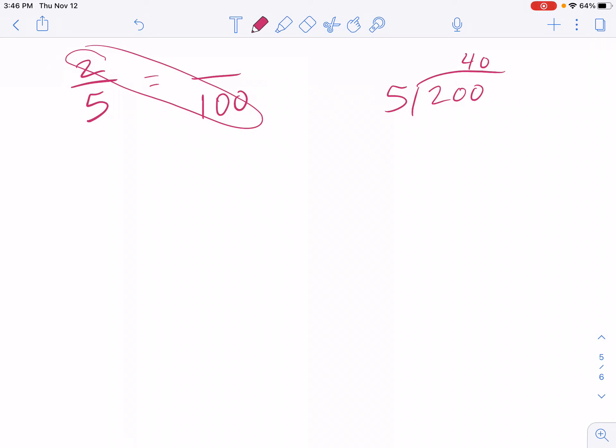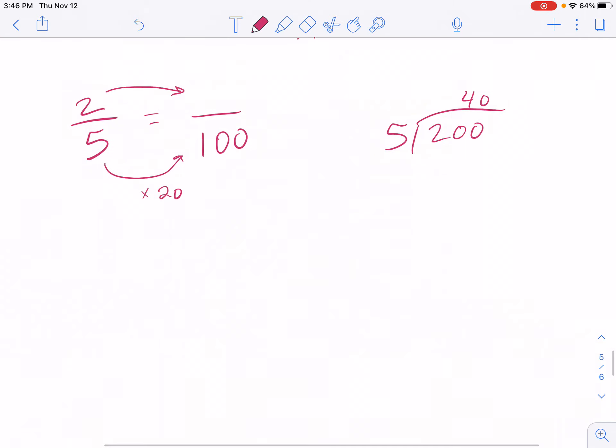Or I could have scaled, which in this case is easier, but remember, it doesn't work for everything. I know that 5 times 20 is 100. So I have to do the same thing up top. If I multiply the bottom by 20, I have to do the same to the top. So 2 times 20 is 40. So since now I know that this is 40 over 100, that is the same as 40%.